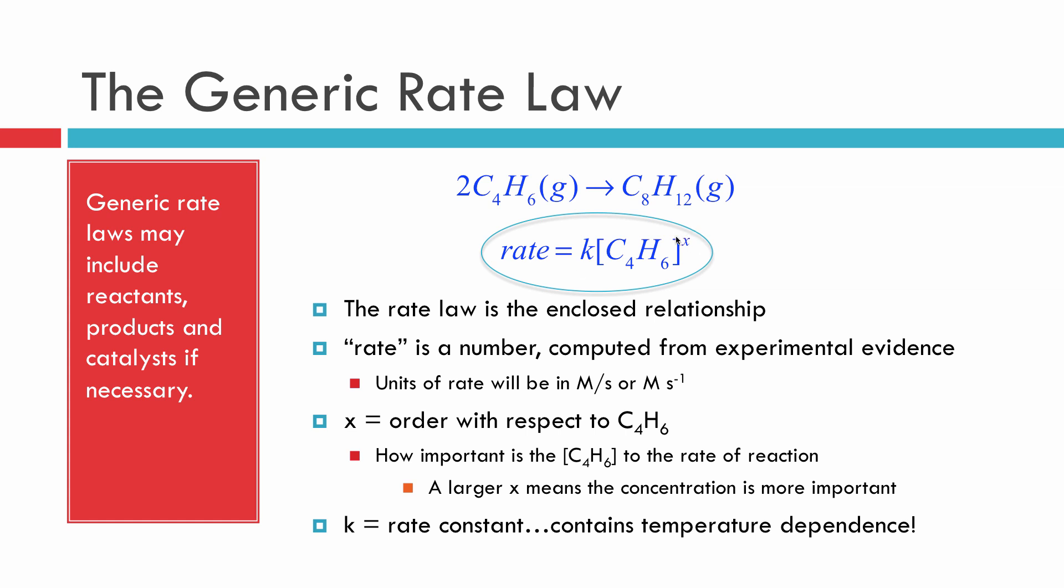The X thing, this power, is called the order with respect to whichever chemical we're looking at, and it expresses how important the concentration of this particular compound is to the overall rate of reaction. Finally, the K is called the rate constant, and it contains the temperature dependence and is something that will be discussed later on.